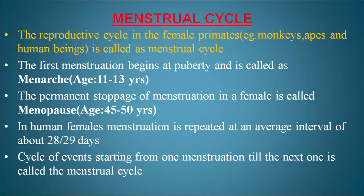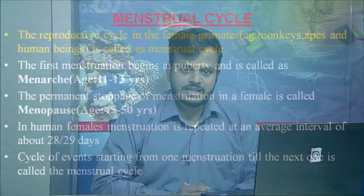In human females, menstruation is repeated at an average interval of 28 to 29 days. The cycle of events starting from one menstruation till the next one is called the menstrual cycle — that is, one menstrual cycle is composed of 28 to 29 days.